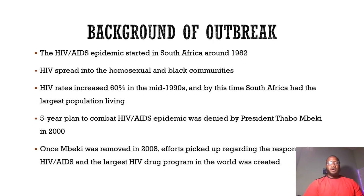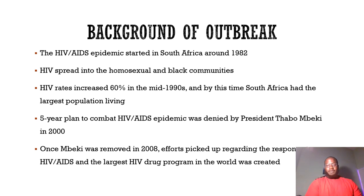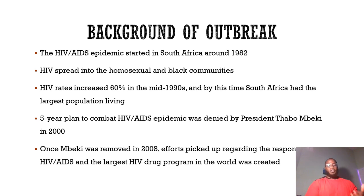The HIV and AIDS epidemic started in South Africa around 1982, around the same time as many other countries. HIV spread into the homosexual and Black communities, and HIV rates increased 60% by the mid-1990s. By that time, South Africa had the largest population living with HIV. So from 1982 to around 1995, HIV rates increased 60% within a population that now exceeds 60 million, showing how quickly the virus spread throughout the country.